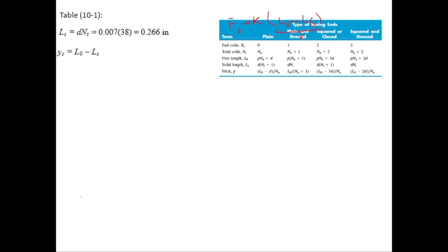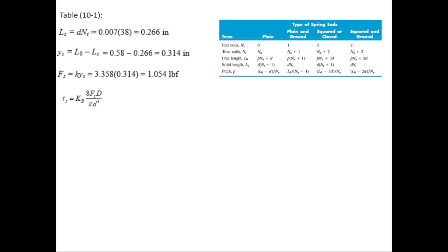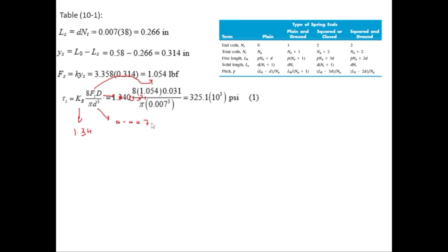The solid deflection YS = L0 − LS = 0.53 − 0.266 = 0.264 inches. Wait — putting the values gives YS = 0.314 inches. Then FS = K × YS = 3.358 × 0.314 = 1.054 lbf. The shear stress at solid length is τS = KB × 8·FS·D / (π·d³). Substituting KB = 1.340, FS = 1.054 lbf, D = 0.031 in, d = 0.007 in gives τS = 325.1 kpsi.